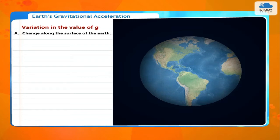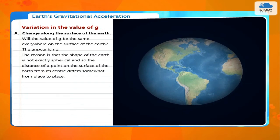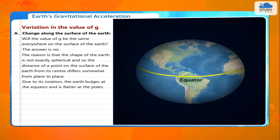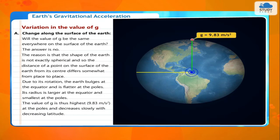Change along the surface of the Earth. The value of g is not the same everywhere on the surface of the Earth. The reason is that the shape of the Earth is not exactly spherical. Due to its rotation, the Earth bulges at the equator and is flatter at the poles. Its radius is largest at the equator and smallest at the poles. The value of g is highest at the poles (9.83 m/s²) and lowest at the equator (9.78 m/s²).